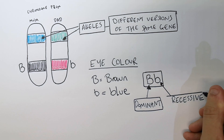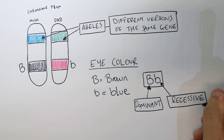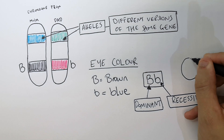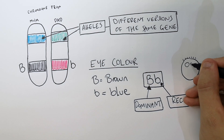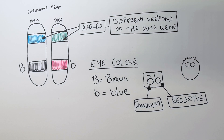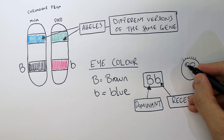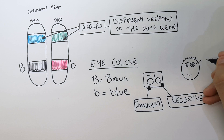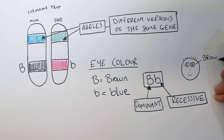The little b, the little letter, is recessive. That means that this person has got the big B gene, which will give her or him brown eyes, because the dominant gene will always be expressed over the recessive.